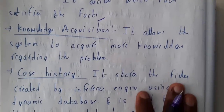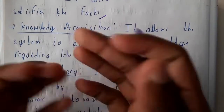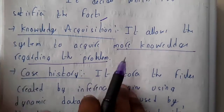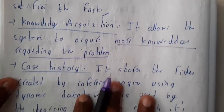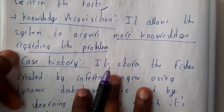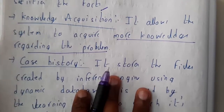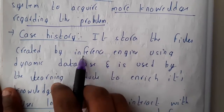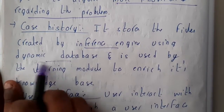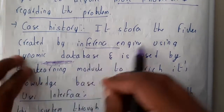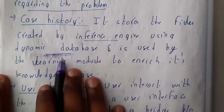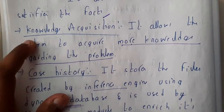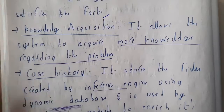Knowledge acquisition allows the system to acquire more knowledge regarding the problem — data flows from the case study into this module. The case study stores files created by the inference engine using the dynamic database. These stored files are then used by the learning module — that is, the knowledge acquisition module — to enrich its knowledge.